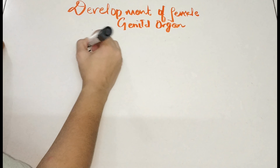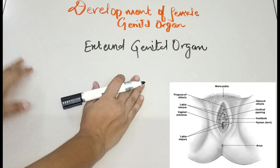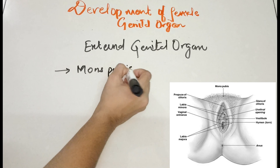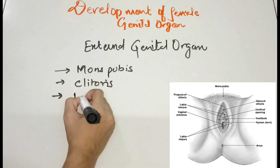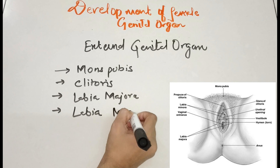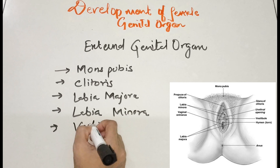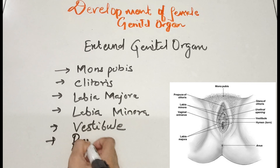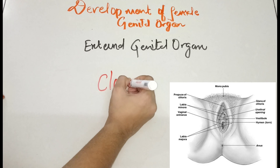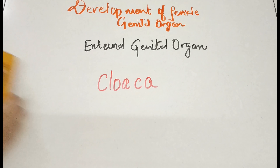The first is external genital organs. The parts we need to remember are: mons pubis, clitoris, labia majora, labia minora, vestibule, and the perineum. Now that brings us to the cloaca — spelled C-L-O-A-C-A. We need to remember this structure and understand what the cloaca is.